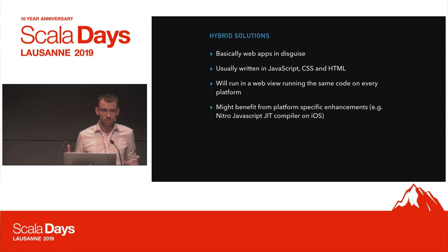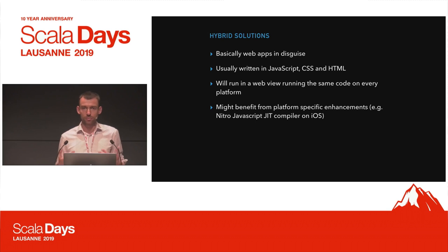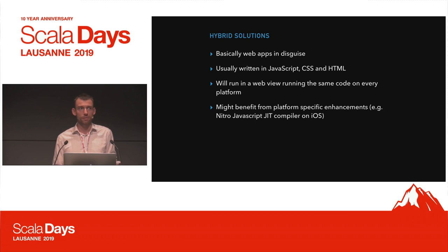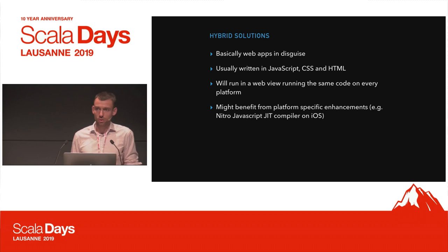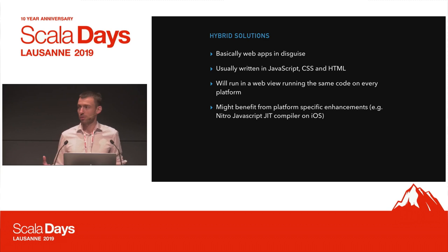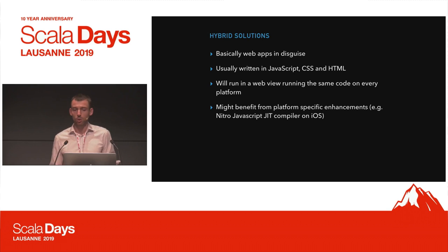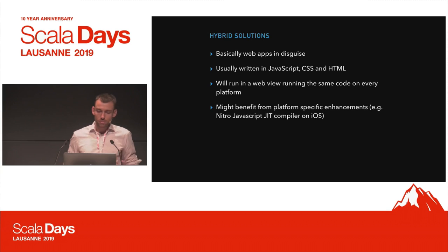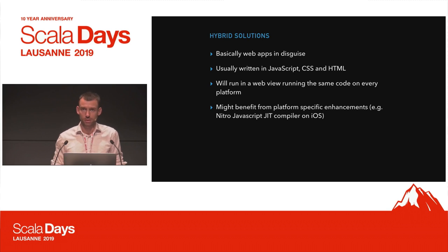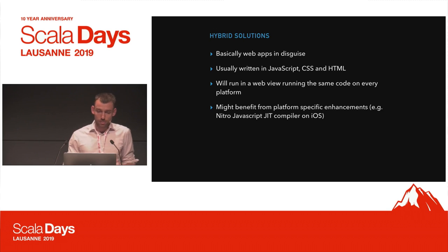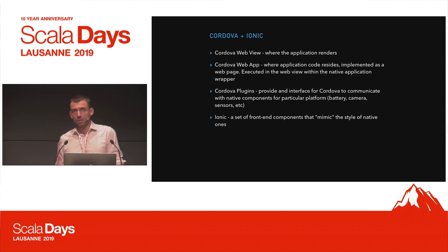Another opportunity to look at is hybrid solutions. Hybrid mobile applications are effectively web apps in disguise — you use the usual web stack like JavaScript, CSS, and HTML, and they run in a web view, running pretty much the same code on every platform. On some platforms like iOS, they can benefit from platform-specific optimizations like the neural JavaScript JIT compiler. But these are effectively web applications running on the phone.